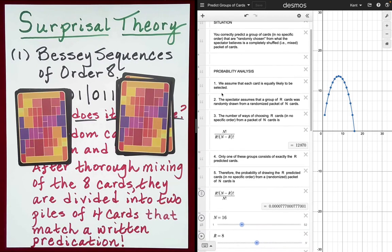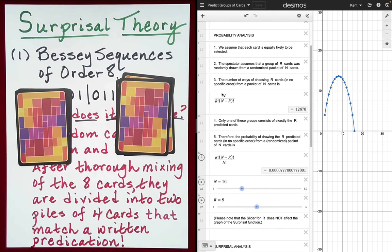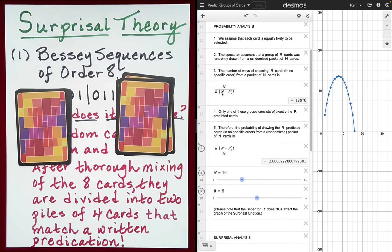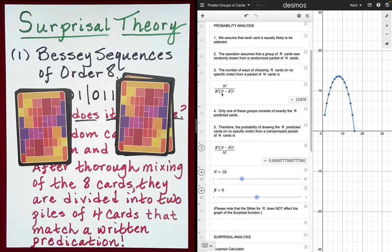So if you notice here, I have a slider which will allow us to adjust this activity to the various Bessey sequences. At the moment, I have it set for the quasi-Bessey sequence of order 16. So we'll go ahead and adjust that down for our current activity. So there we go. We have eight cards. Now, we are selecting four of them. So the number of ways that you can select four cards from a set of eight cards is 70.